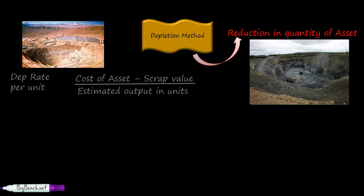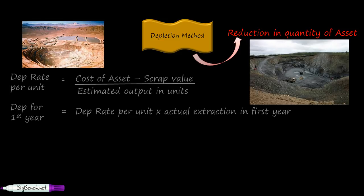So once you divide this by the estimated outputs in units, you will not get depreciation per year but the depreciation rate per unit. So if the denominator is tons, you will get depreciation rate per ton of coal or gold or whatever kind of mine it is. Depreciation for first year equals the depreciation rate per unit times actual extraction in first year, whatever quantity of coal you extract multiplied by the depreciation rate per kg or per ton.